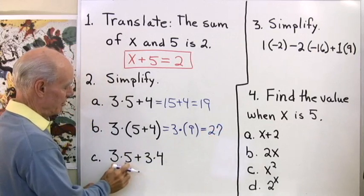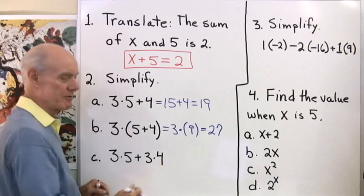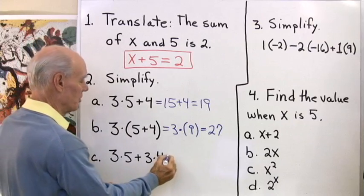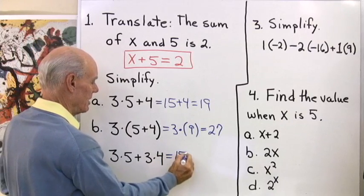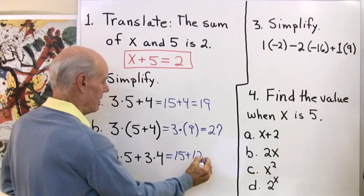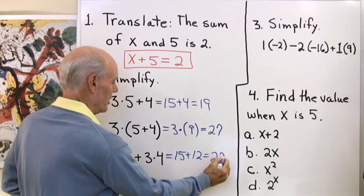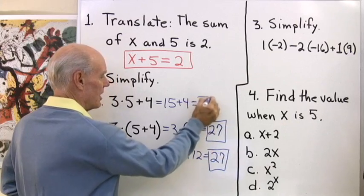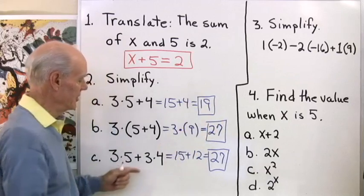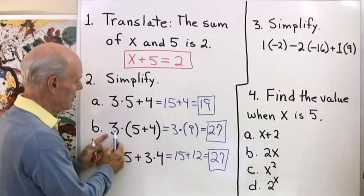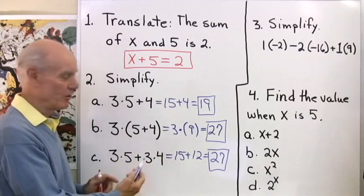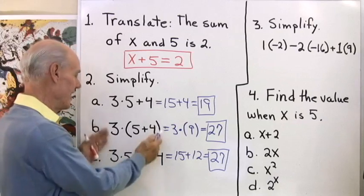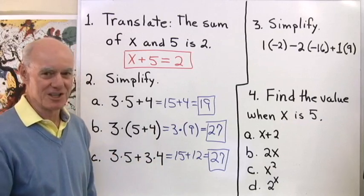Down here, 3 times 5 plus 3 times 4: we do multiplication left to right before addition, so that's 15 plus 12, which is also 27. As we get to the properties of numbers, you'll find this is no coincidence — 3 times the quantity 5 plus 4 is always the same as 3 times 5 plus 3 times 4. That's called the distributive property.